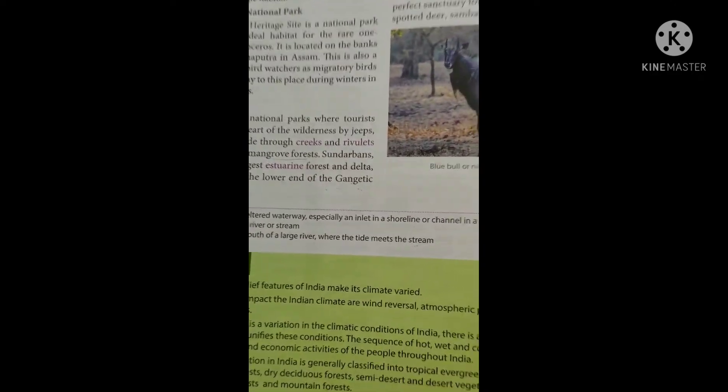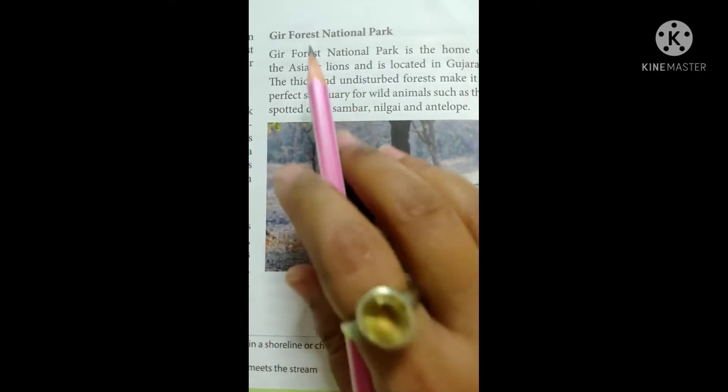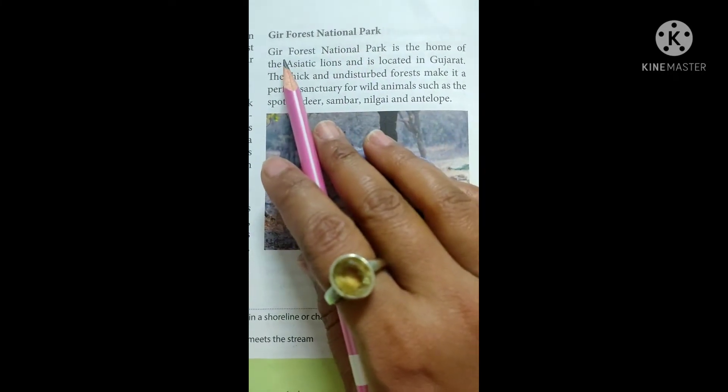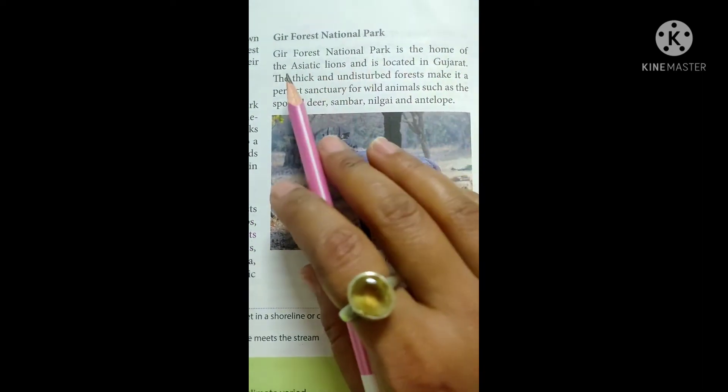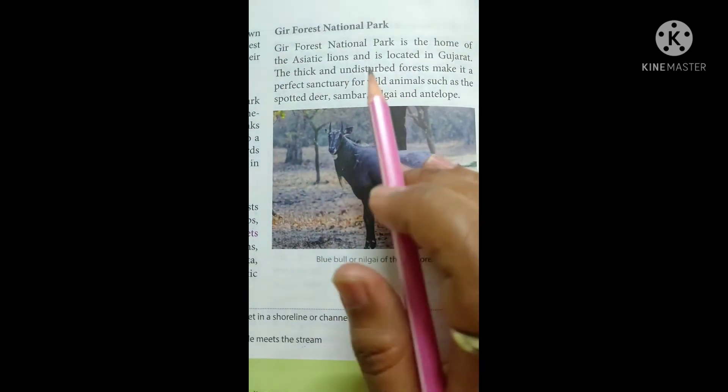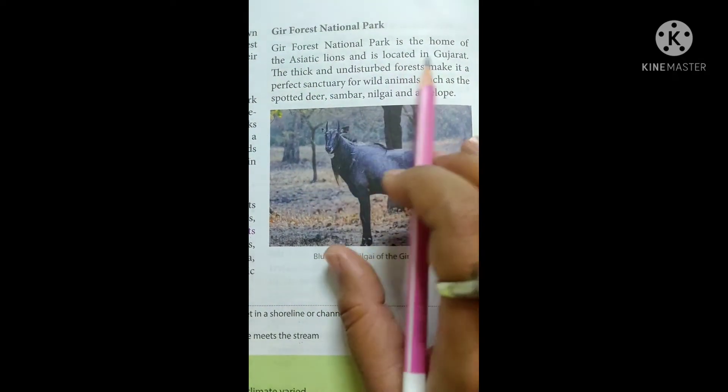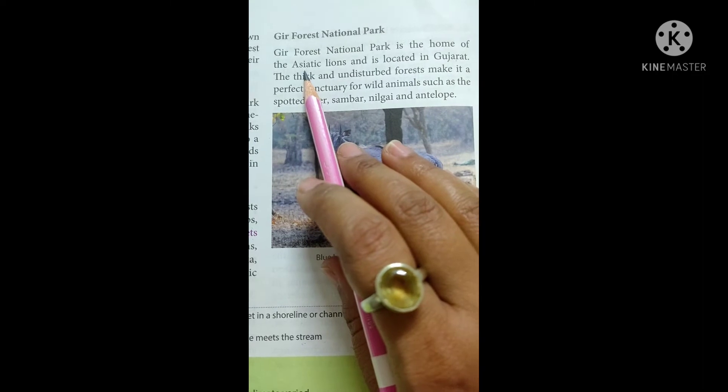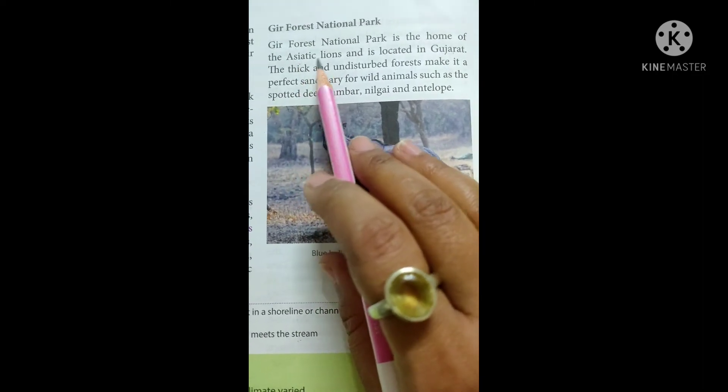Now the last is the Gir Forest. Gir Forest national park is the home of the Asiatic lions and is located in Gujarat. Gir national park is located in Gujarat and here you can see Asiatic lions.